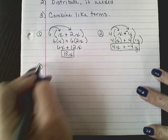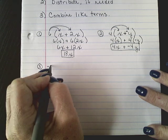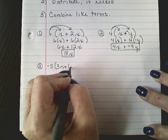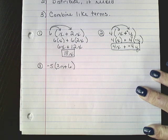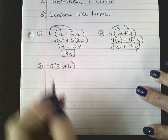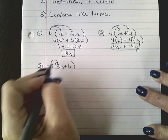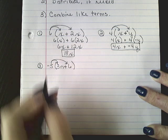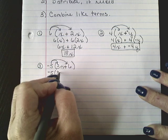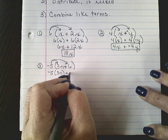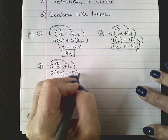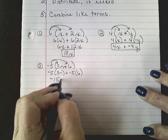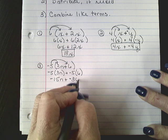Alright, example three. We have negative 5 times 3n plus 6. Alright, I want to draw my arrows because I know I have to multiply by the 3 and I have to multiply by the 6. So this would break down as negative 5 times 3n plus negative 5 times 6. This would become negative 15n plus negative 30.